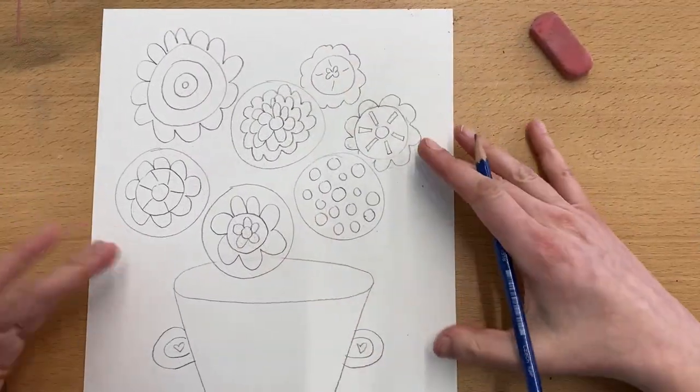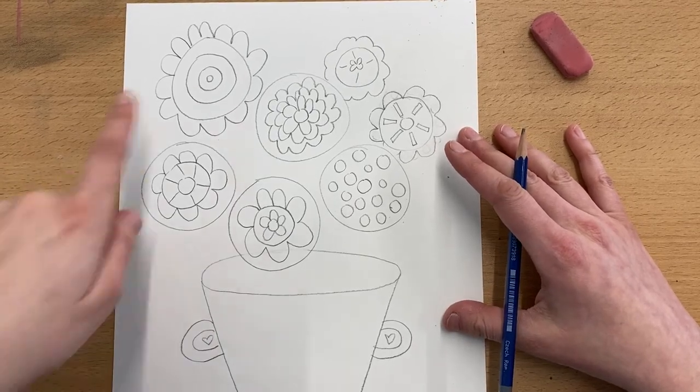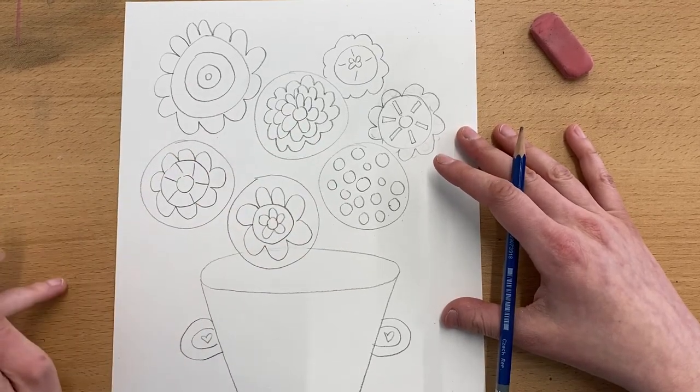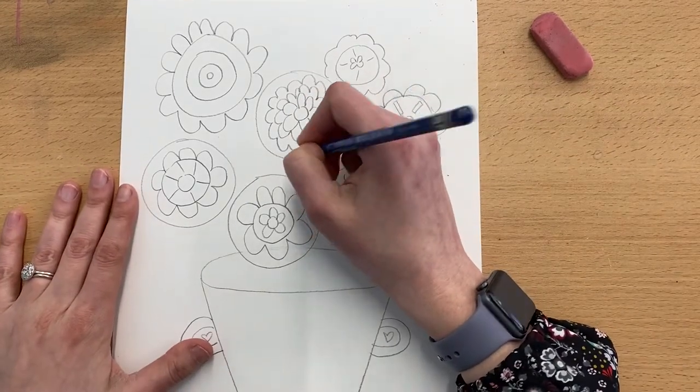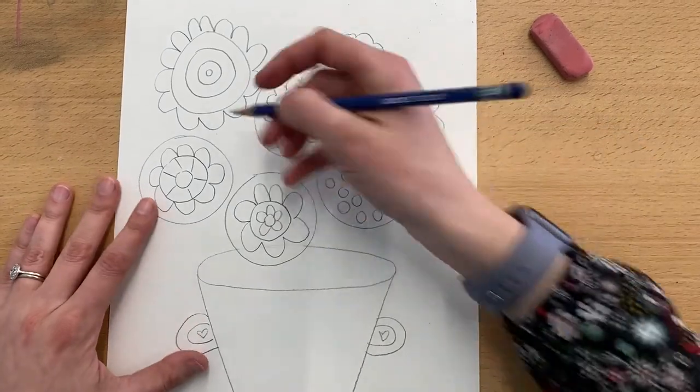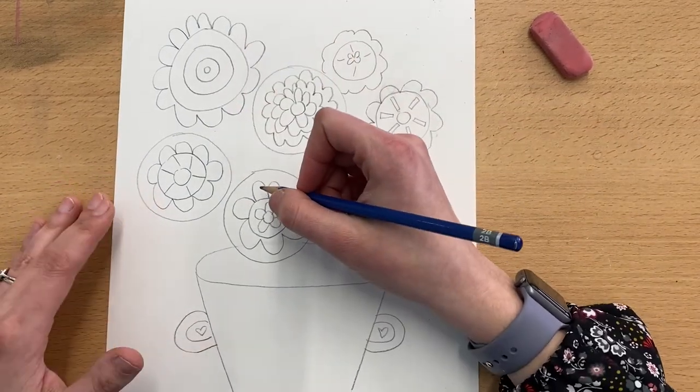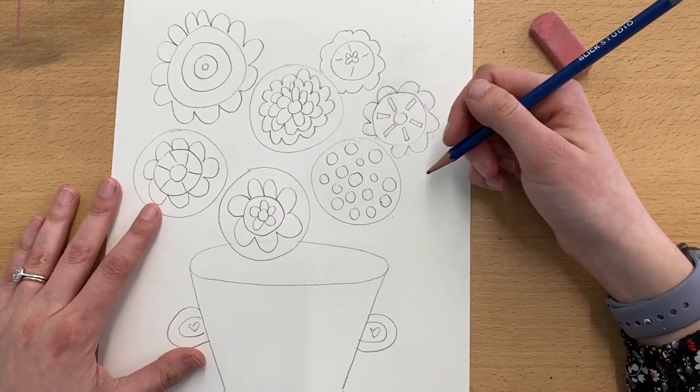All right, so now that I've decorated each of the flowers with a pattern, you might want to fill in a little bit more of your space. For some of us that might mean that we draw some smaller flowers in here. Don't get too small since we're going to be painting these with watercolor. You might want to draw some stems in or you might also want to draw some leaves in to help fill up the space as well.